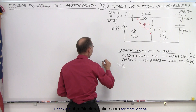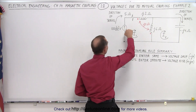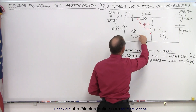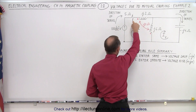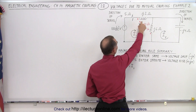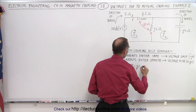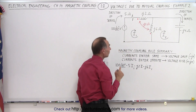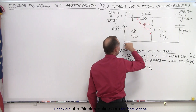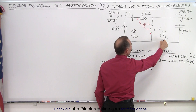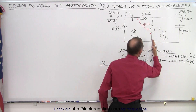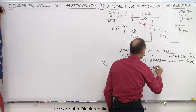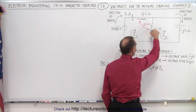Let's call that KVL1. Now as I go around the loop, I will have a voltage drop for every component relative to the current I1. Since I'm traveling in the same direction as the current, I have voltage drops: minus 5 times I1, minus J2 times I1, and minus J6 times I1. Now I also have a current I2 going through this inductor, and since I2 is traveling in the opposite direction of my travel, that gives a voltage rise: plus J6 times I2.